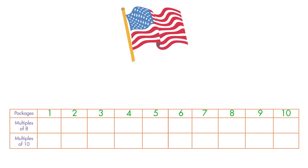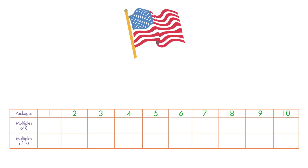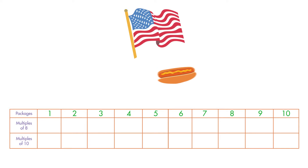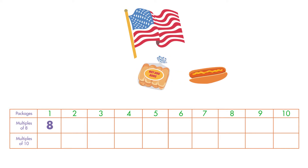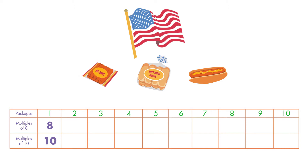Suppose we're celebrating the 4th of July and grilling hot dogs. Buns are sold in packs of 8. Hot dogs are sold in packs of 10. We want the same number of hot dogs as buns. So, we can find the least common multiple of 8 and 10 to see how many packages of each to buy.